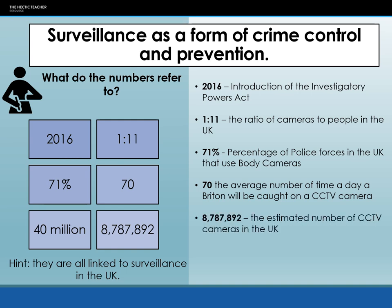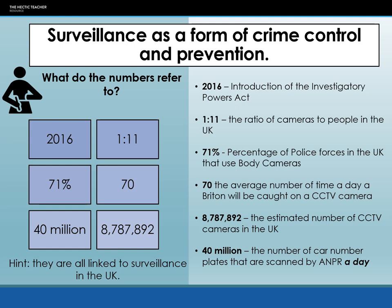8,787,892 is the estimated number of CCTV cameras in the UK — these might be government ones or privately owned ones, that's why it's an estimate, because not everyone will admit they've got CCTV. And 40 million is the number of car number plates that are scanned by automatic number plate recognition per day — not counting multiple scans of the same number plate. That's individual number plates scanned every day, and again this is pre-COVID times when there were more people on the roads.